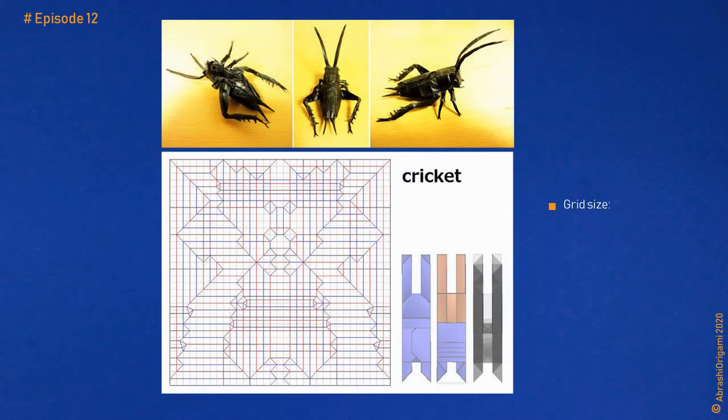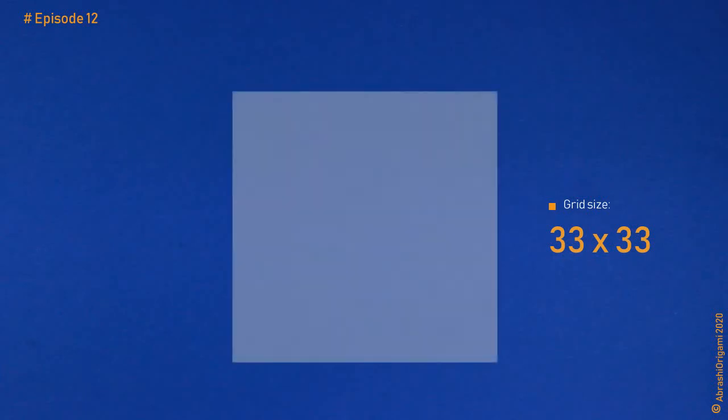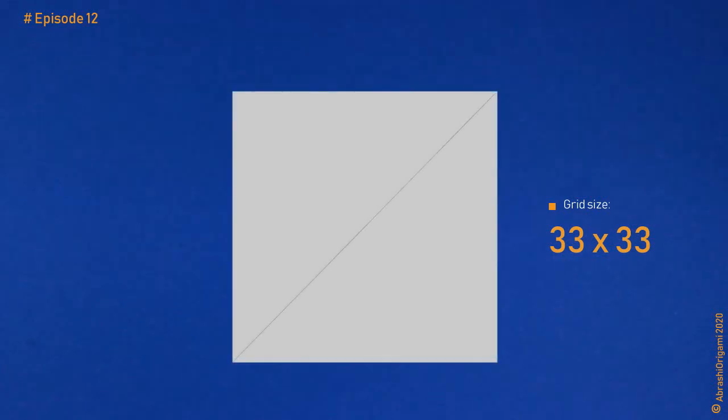For instance, this is the crease pattern of a cricket design by Coda MI. Maybe it is not obvious, but this model is based on a 33 by 33 grid. As you know, 33 is a prime number itself, so we have to define basic unit size in one take. So can we construct 33 by 33 grid using the shown method? Of course we can. Again, first we have to divide the paper in half along a diagonal. This is always the first step. In addition, we know that 33 is between 32 and 64, so we have to divide the right edge of the paper into 32 equal sections. I hope everything's been clear thus far.